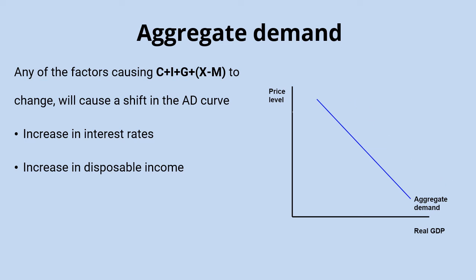An exchange rate appreciation would make exports more expensive for consumers abroad, so demand for exports falls. At the same time, cheaper imports as a result of that appreciation means demand for imported goods rises. Together, this means the X minus M part of the aggregate demand equation will come down, aggregate demand falls, and the curve shifts to the left.